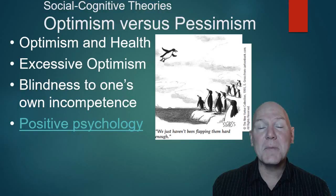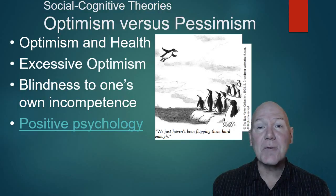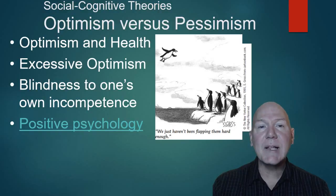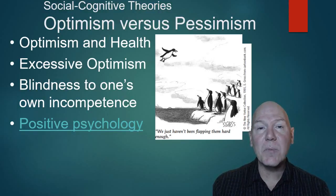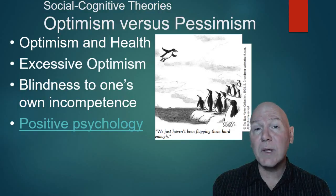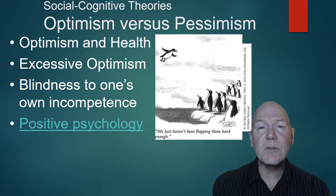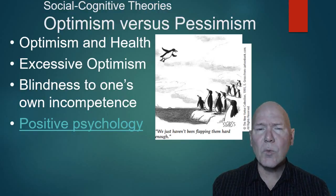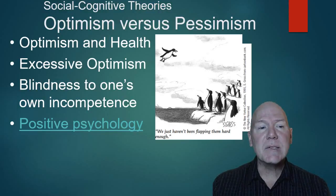However, excessive optimism can also cause problems. If we feel too confident in some situations, we can get ourselves into trouble. For example, late adolescents often feel optimistically that they are less likely to contract the HIV virus, which can lead to risky behavior. There's also the concept of blindness to one's own incompetence — you have to be competent to recognize incompetence. If you have bad grammar, you may not know it because you can't recognize what bad grammar is.